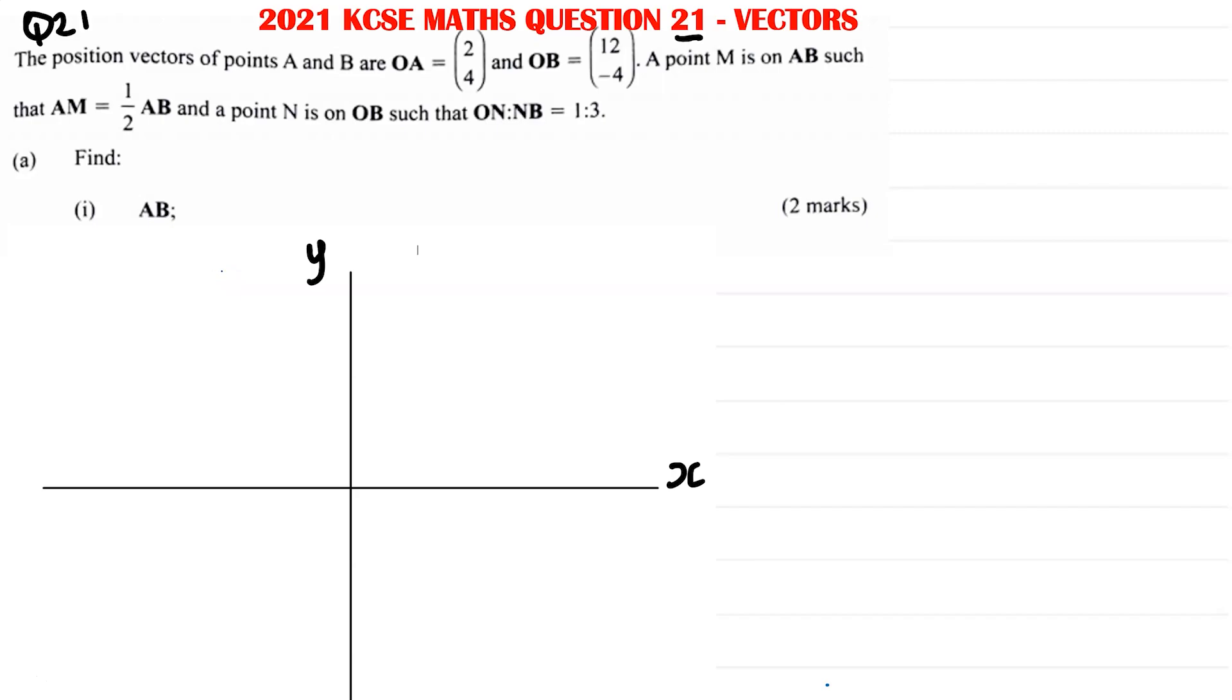In this session we're going to solve question 21 from the KCSE Mathematics paper 2021. We are told the position vectors of point A and point B are OA is (2, 4) and OB is (12, -4). A point M is on AB such that AM is half of AB, and a point N is on OB such that ON to NB is 1:3.